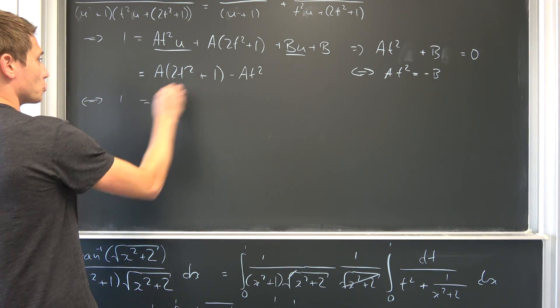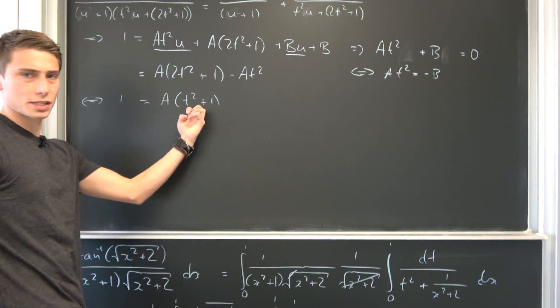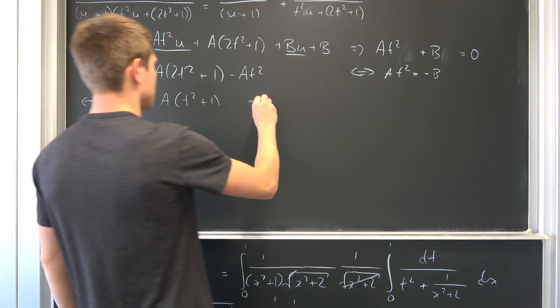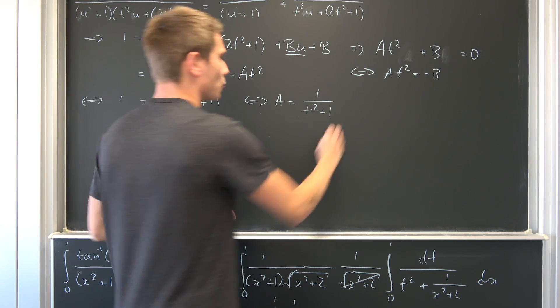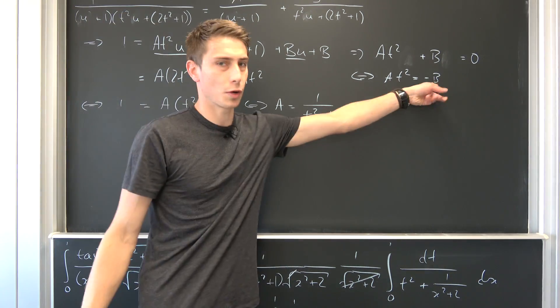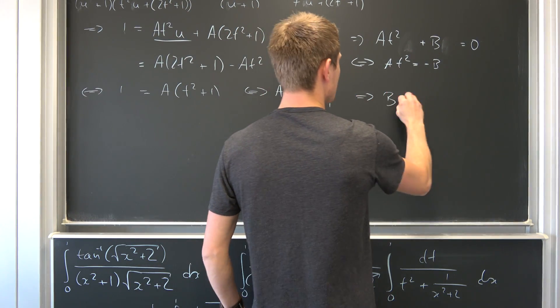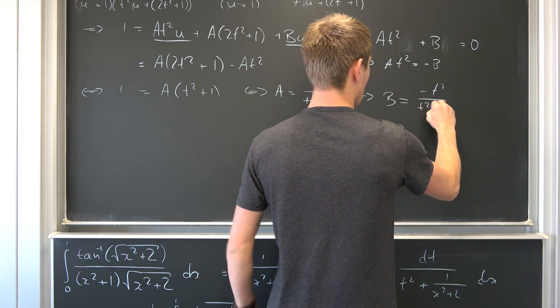We can divide both sides by this right here, never gonna be a zero in no case. That also means that A is nothing but 1 over t squared plus 1. And you see we also know what our B is. B is nothing but negative this chunk. That also means that B is nothing but negative t squared over t squared plus 1.